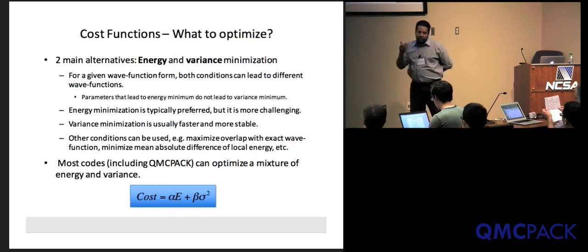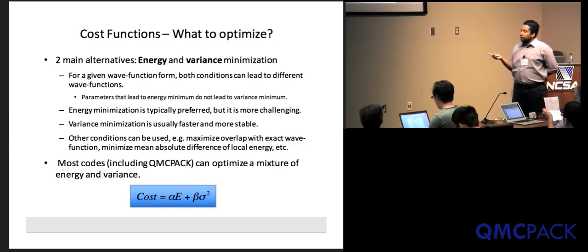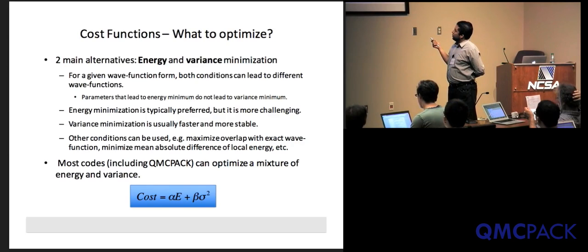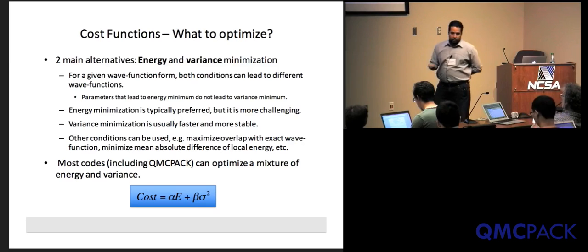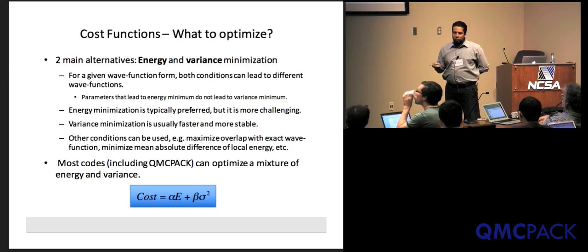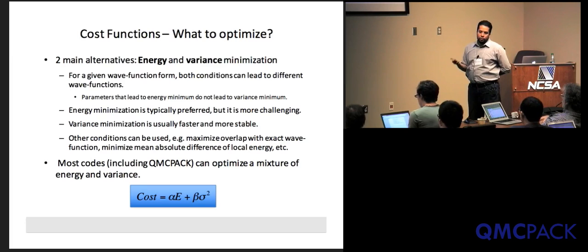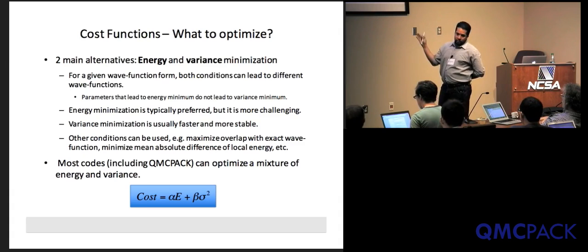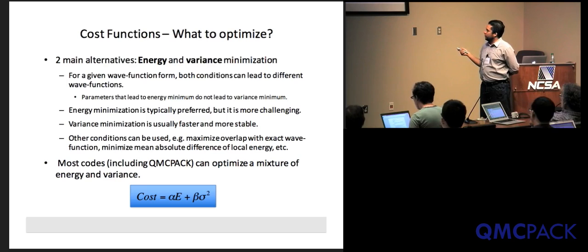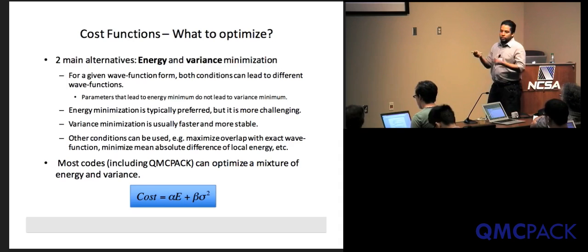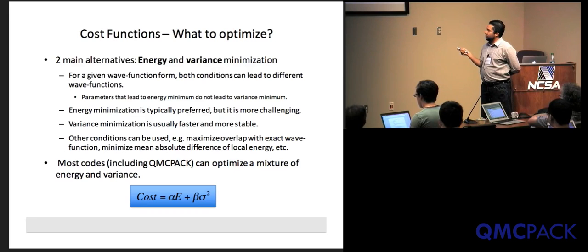What we actually optimize — we need a function to minimize. Because of the variational principle and zero variance principle, you can either minimize energy or variance. Historically, variance was optimized first because it's a simpler, positive-definite optimization problem. But what we really want to minimize is the energy — lower energy solutions tend to be better. In most codes, and certainly in QMCPack, you have an arbitrary linear combination of the two. I personally tend to do something like 95% energy and 5% variance.